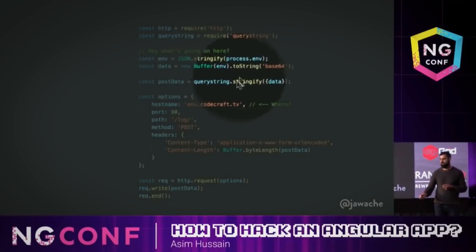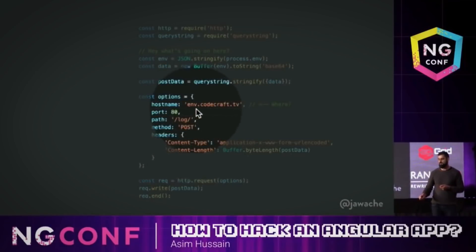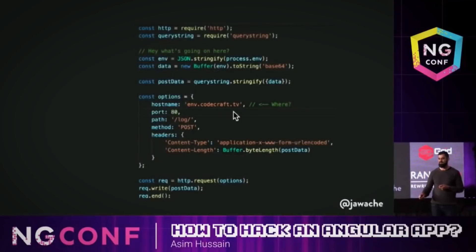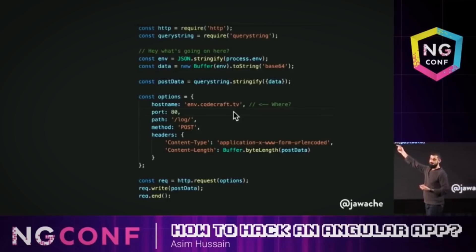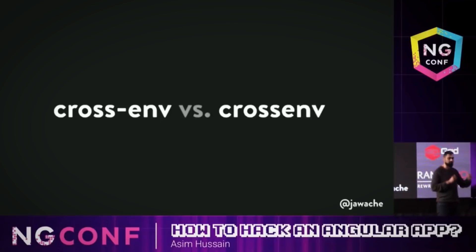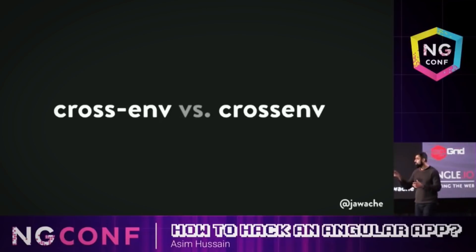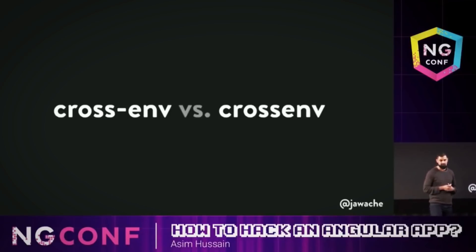It's taking environment variables, turning them into HTTP POST requests, and posting them to his server. So who here stores passwords, connection strings, and environment variables on their server? Cross-env is the legitimate one. Cross-env without the hyphen is the hacked one. All it was, was the same code with a different package setup script published to NPM.